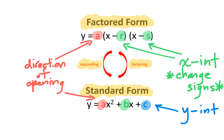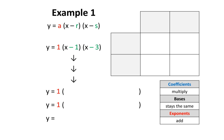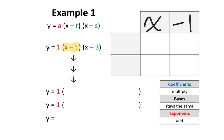Today, we're going to be focusing on expanding. In our first example, we have an equation of a quadratic relation in factored form, and we want to use the process of expanding to convert it to standard form. The table on the right is going to help us do that. We're going to start with the variable x and place it here, then negative 1 here, then x again here, and finally negative 3 here.